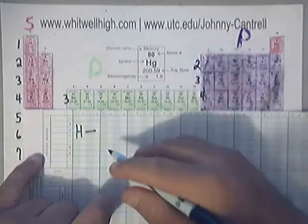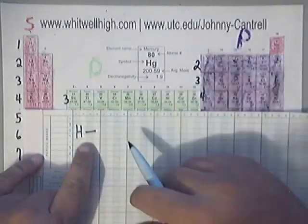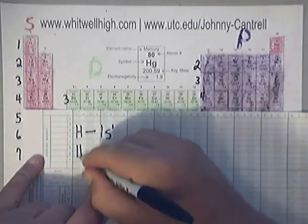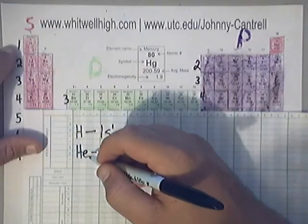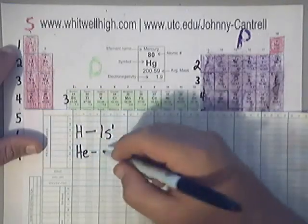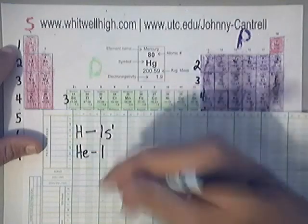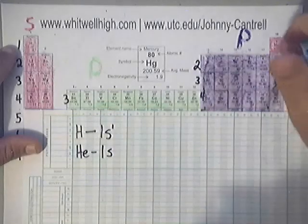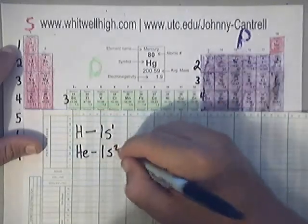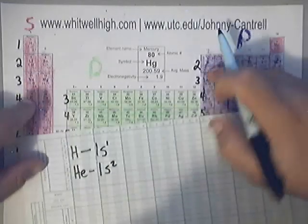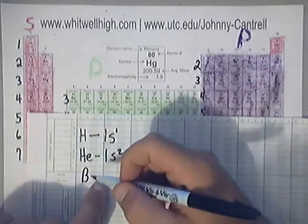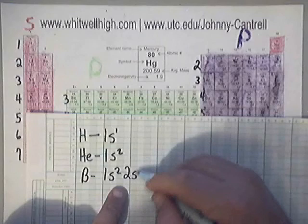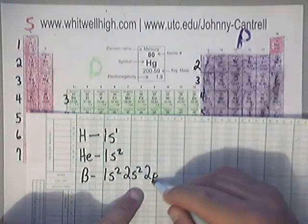Let's start with hydrogen. The electron configuration of hydrogen is 1s¹. The electron configuration of helium — it's in the first row, the pink (s-block), so the principal quantum number is one. It's an s orbital, and it's the second element in that row, so it's 1s². If you wanted to do boron (B), it would be 1s², 2s², then 2p¹.